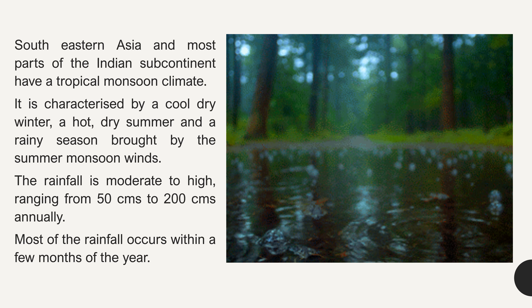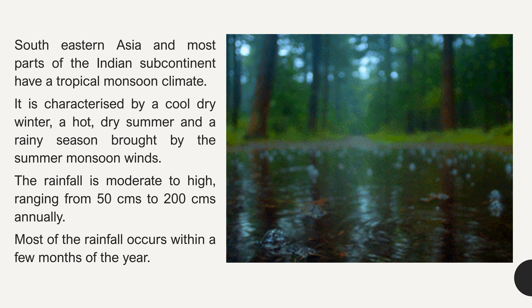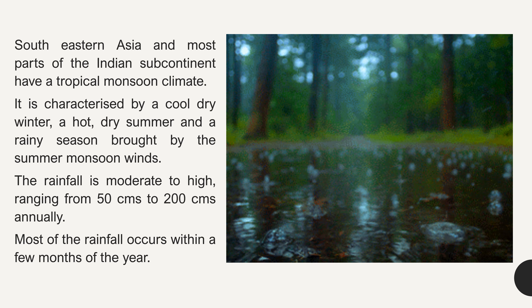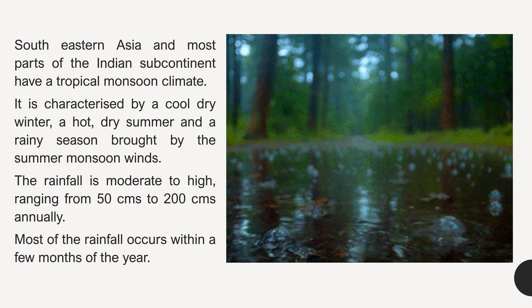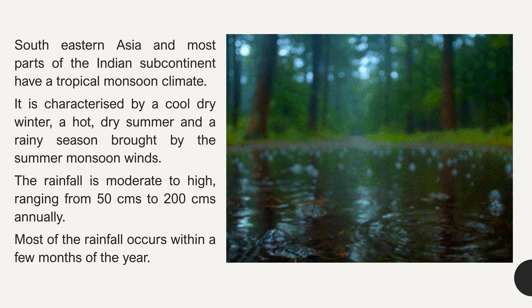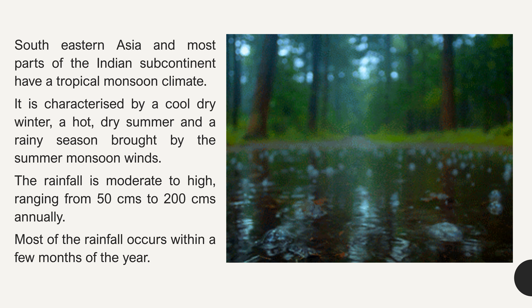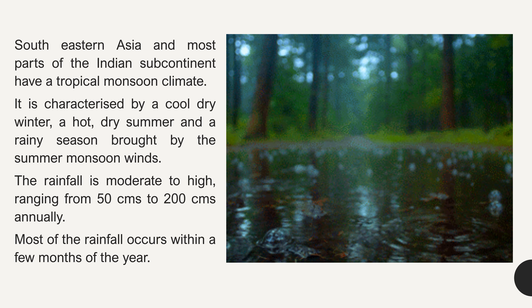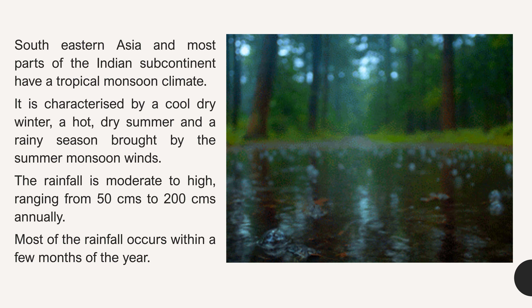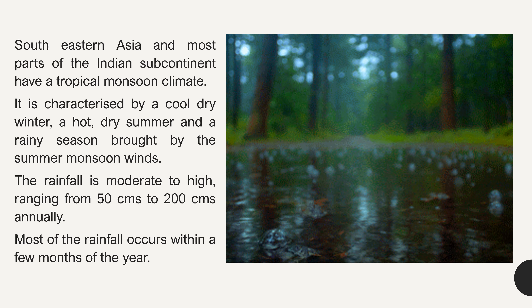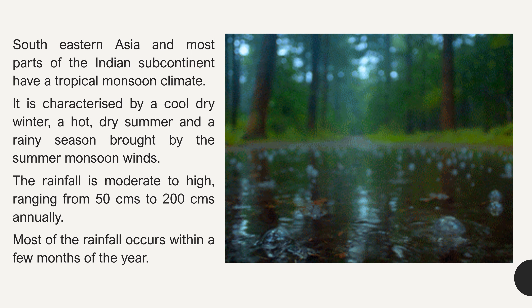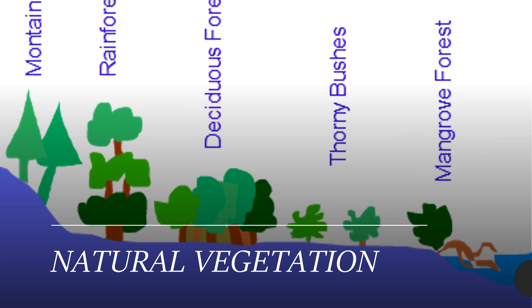It rains very heavily in areas which are on the windward side of the mountains. As one goes further into the interior of the Indian subcontinent, the rainfall begins to decrease. The natural vegetation varies according to the amount of rainfall.